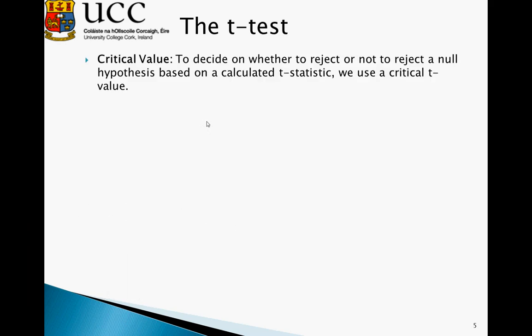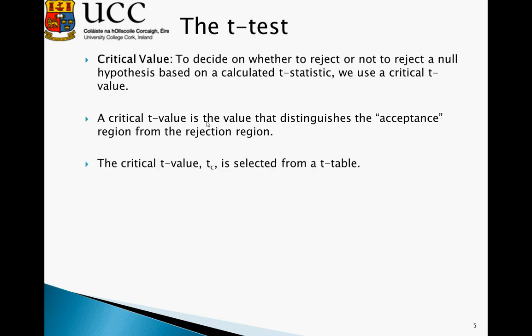Once we've calculated this test statistic, we must compare it to the critical value. And the critical value essentially decides on whether we reject or do not reject a null hypothesis. The critical value is the value that distinguishes the acceptance region from the region of rejection, and this critical value is obtained from the t-statistical tables.